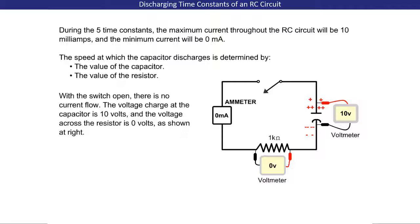With the switch open, there is no current flow. The voltage charge at the capacitor is 10 volts, and the voltage across the resistor is 0 volts, as shown at the right.